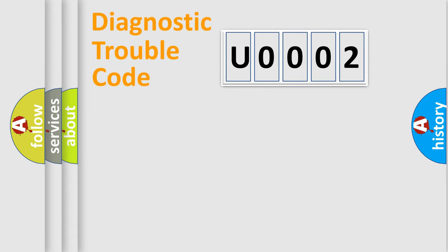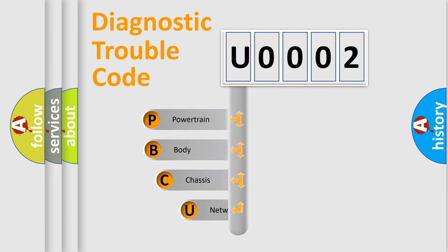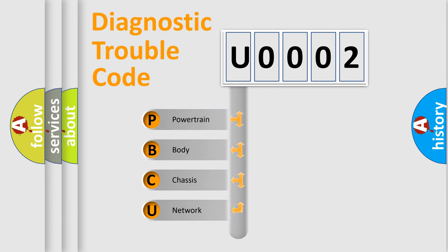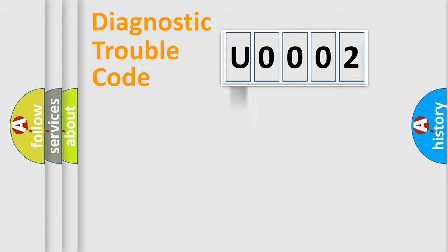First, let's look at the history of diagnostic fault code composition according to the OBD2 protocol, which is unified for all automakers since 2000. We divide the electric system of an automobile into four basic units: powertrain, body, chassis, and network. This distribution is defined in the first character of the code.